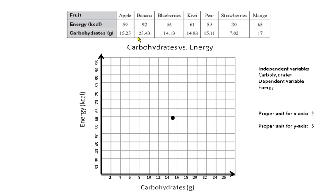Same thing with the banana. We're going to go to 23.43, which is kind of just between 22 and 24. Then 92 is going to be way up here, in between 90 and 95, a little closer to the 90. So there we go — we've got two points: the apple and the banana.